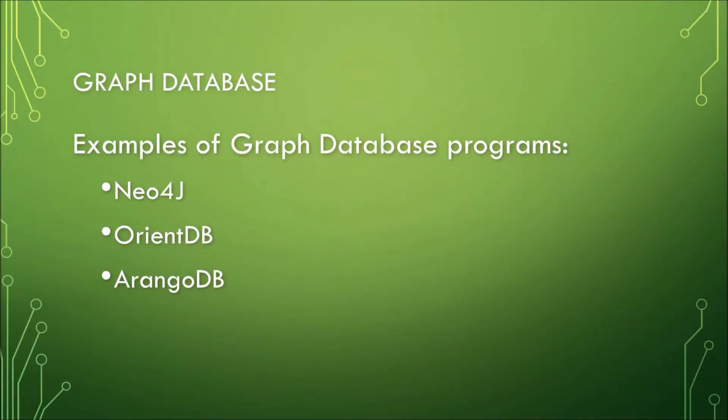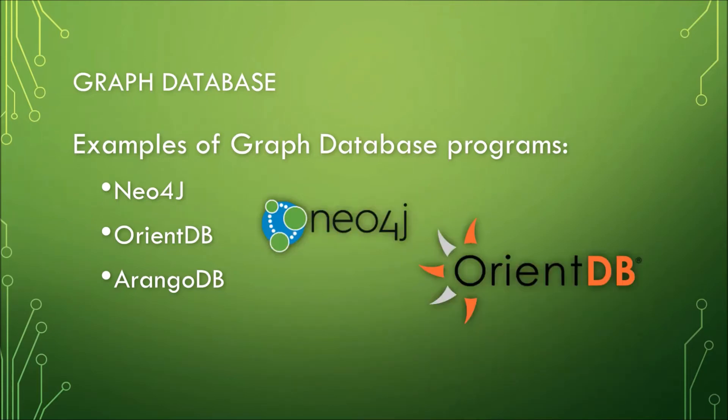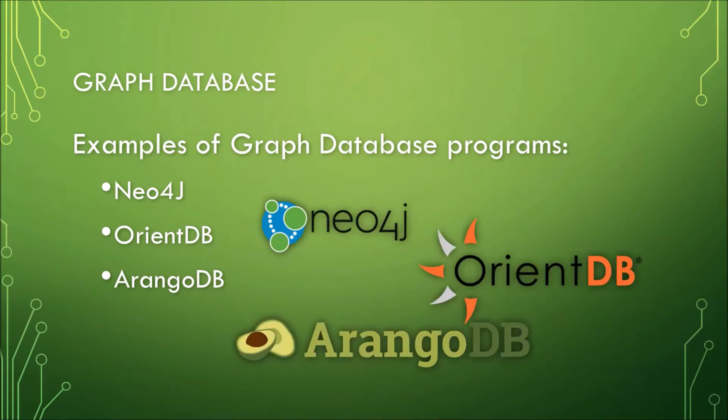Examples of graph database programs include Neo4j, OrientDB, ArangoDB, and a few others. Graph databases are mostly used for social networks, logistics, and geospatial data such as maps.